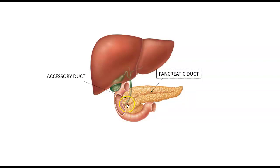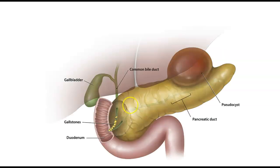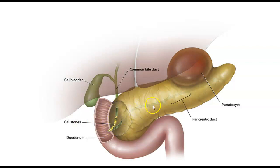This system also includes a couple of sphincters, and one sphincter at the very end called the ampulla of Vater. Gallstones located in the common bile duct represent one of the most common causes of pancreatitis, due to the close proximity of the common bile duct and the pancreatic duct.